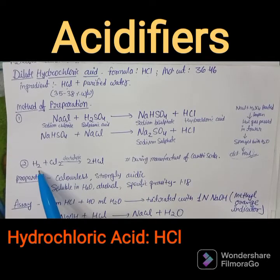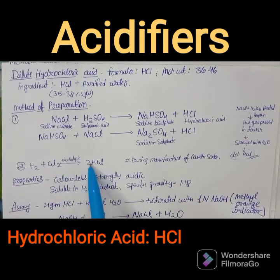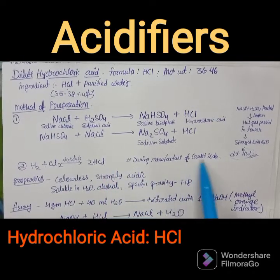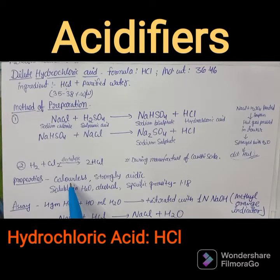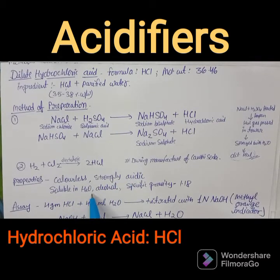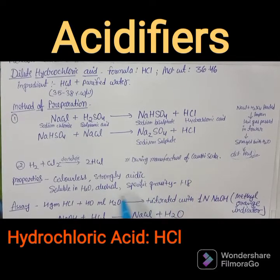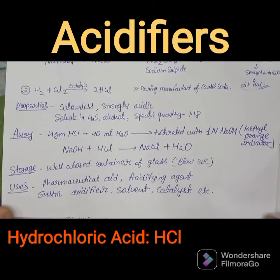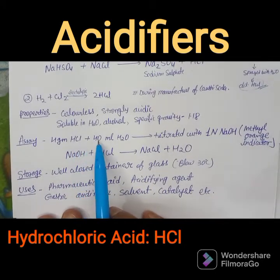The second method of preparation occurs during the manufacture of caustic soda, where electrolysis of hydrogen and chloride takes place. When they are combined, they form hydrochloric acid. Coming to the properties: hydrochloric acid is colorless, strongly acidic, soluble in water and alcohol, and has a specific gravity of 1.18.